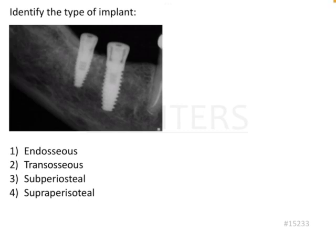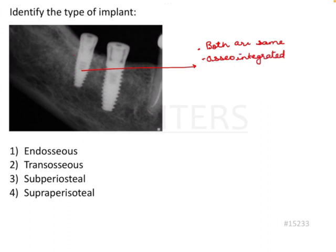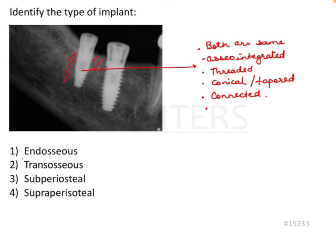The question is to identify the type of implant. In the image we have an IOPA with two implants. Both are identical, both are osseointegrated in the bone — meaning we have bone around the implant totally. They are threaded, they are conical or tapered, they are not connected and they are independent — there is no mesh connecting them.